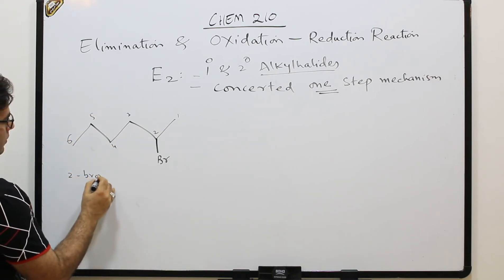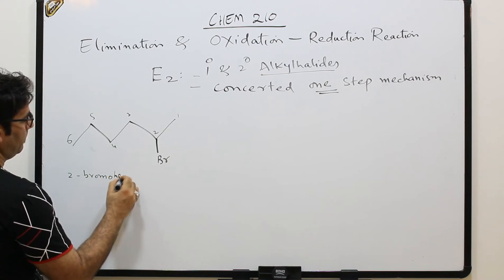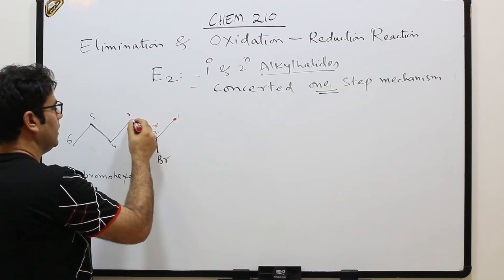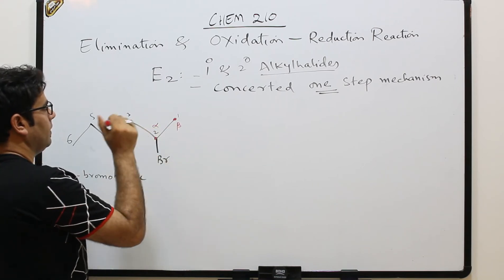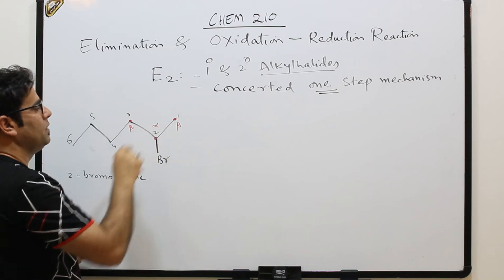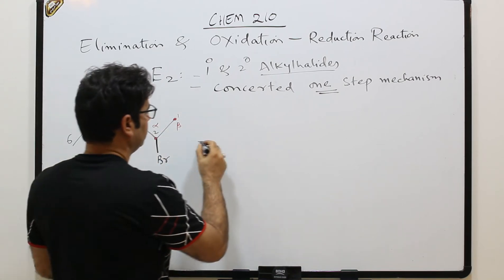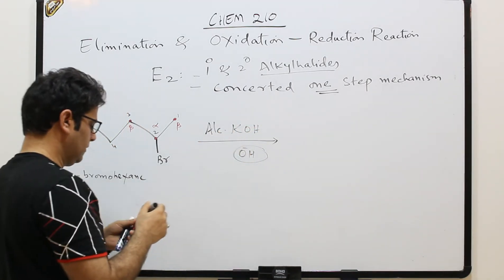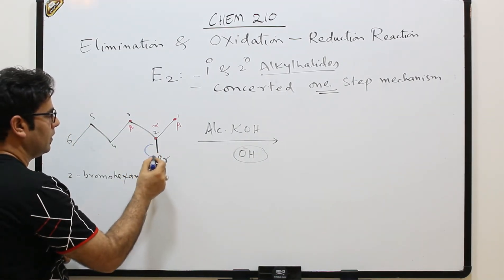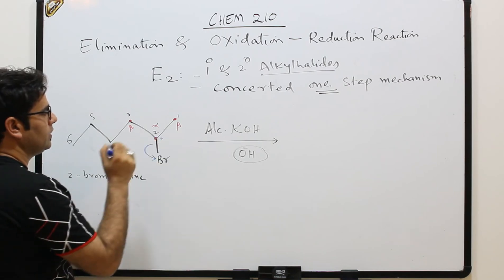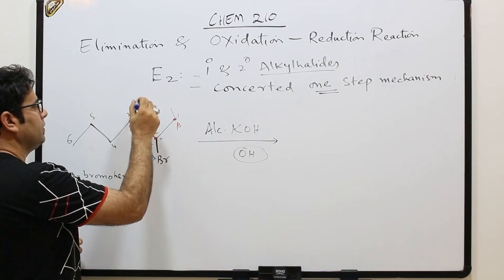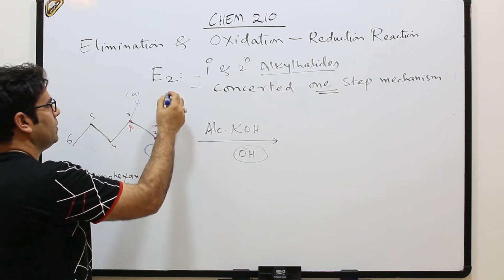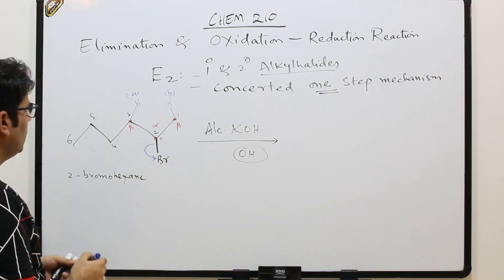Now another example: 2-bromohexane — carbons one through six. This carbon is alpha. The adjacent carbons one and three are both beta carbons. The hydrogens on carbon one and carbon three are beta hydrogens. In the presence of alcoholic KOH, bromine will come out and there will be a positive charge — but in a concerted step, either the hydrogen from carbon one (case A) or from carbon three (case B) is abstracted.